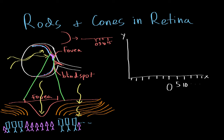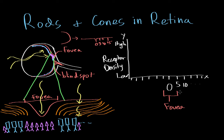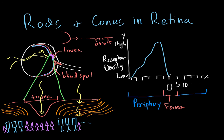On the y-axis we have receptor density — low at the bottom and high at the top. The fovea is in the center, and the periphery extends on both sides. In the periphery there's a really high level of rods; as we get towards the fovea, rod numbers drop. Moving away from the fovea again, rod numbers rise. We then reach a region — the blind spot — where there are no photoreceptors, and then on the other side photoreceptors resume.